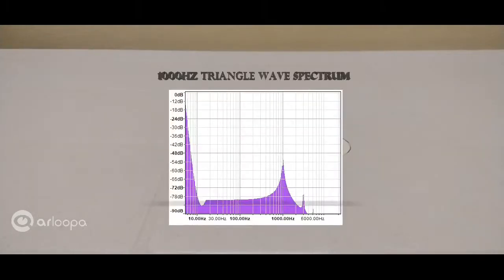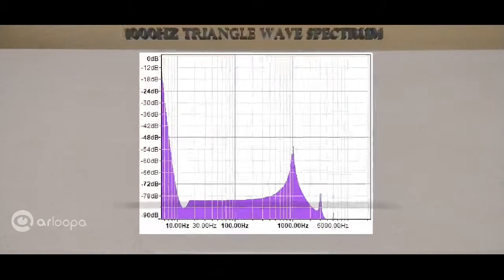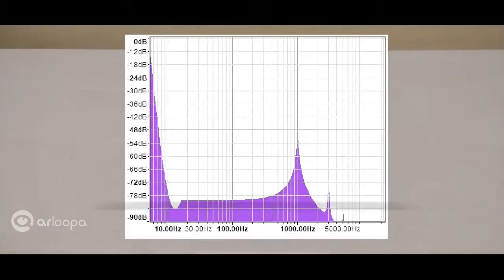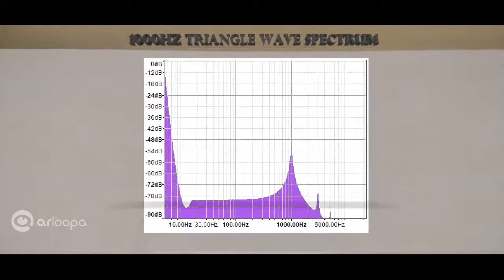Alright, this is a frequency spectrum of 1000Hz triangle wave. Notice the dominant frequency is 1000Hz, and the next one is 1000 times 3, that's 3000 and 5000. Again, we can clearly see that the harmonics are losing their strength very rapidly.